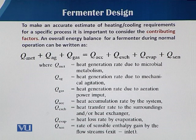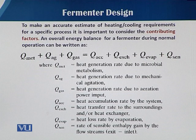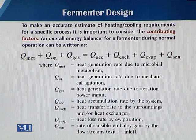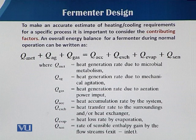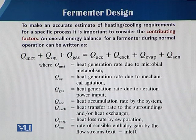Q_met is the heat generation rate due to microbial metabolism — when there is a metabolic process, heat is generated through the metabolic pathways of the cells. When there is agitation, resistance produces heat, denoted by Q_Ag (Ag from agitation). Q_gas is the heat generation rate due to aeration power input, because when aeration is sparged into the fermentation media, resistance causes heat production.